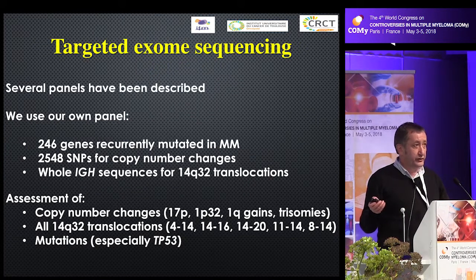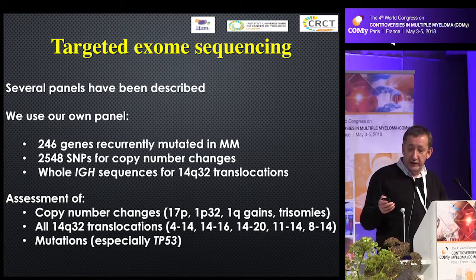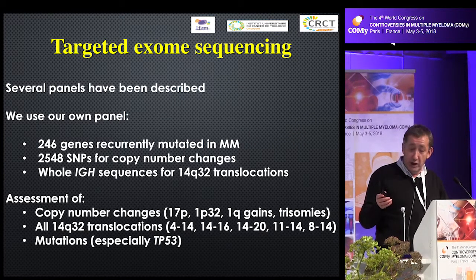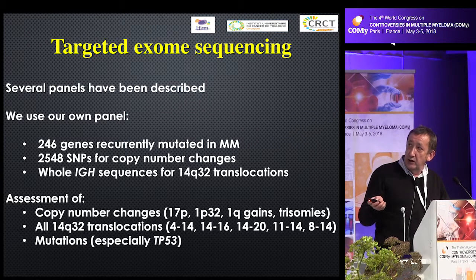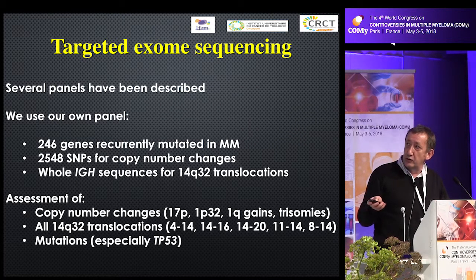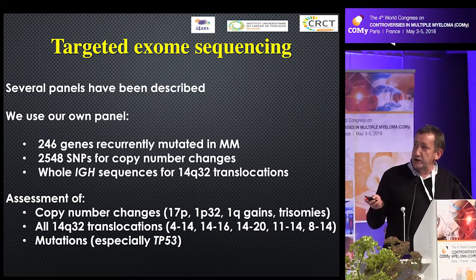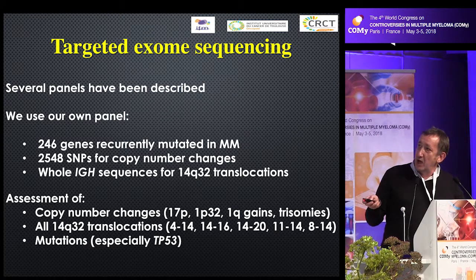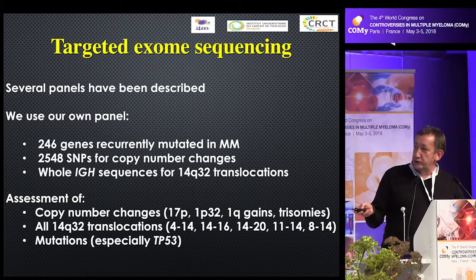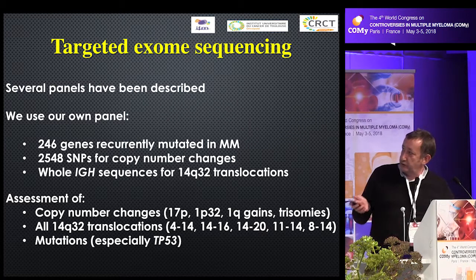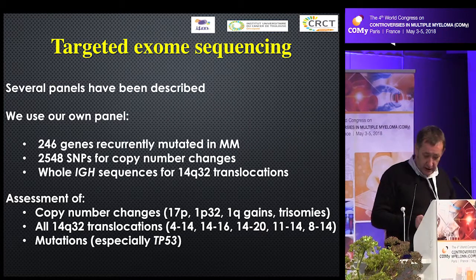To use this information for prognostic assessment of patients, we developed, with our colleague Nikhil Munshi in Boston, a targeted exome panel. We selected 250 genes recurrently mutated in myeloma. We also selected almost 2,500 SNPs to assess copy number — especially 17p, 1p, 1q, and trisomies. And we selected all IGH sequences to identify all translocations: t(4;14), t(14;16), t(14;20), t(11;14), t(8;14), etc.